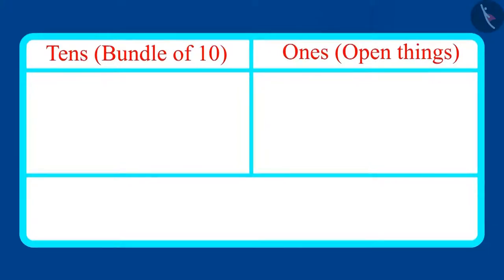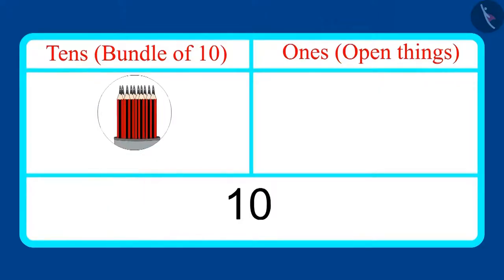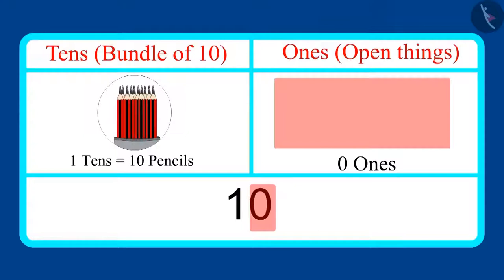Come on children. Let us now write these numbers in the form of tens and ones. First of all, let's look at the number of pencils, which is ten. This means it has one tens and zero ones.